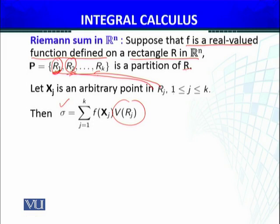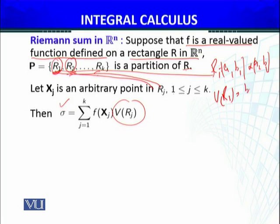For example, R_1, if A_1, B_1, cross A_2, B_2, if this is the rectangle, then R_1 will be B_1 minus A_1, multiplied by B_2 minus A_2. That will be the content.